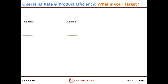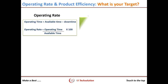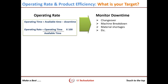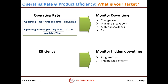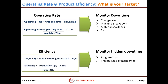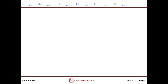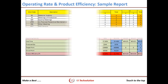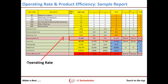The second loss is process loss. Most companies control the operating rate, which includes downtime like changeover, machine breakdown, and material shortages — these are visible losses. But hidden downtime like program loss and process loss due to manpower working style can be controlled if you monitor product efficiency. Initially at one company, product efficiency was below 30%. After setting up a proper process, we achieved above 80%.